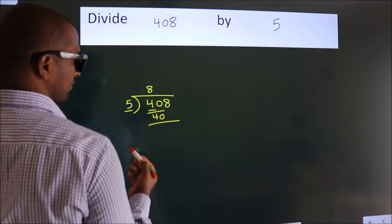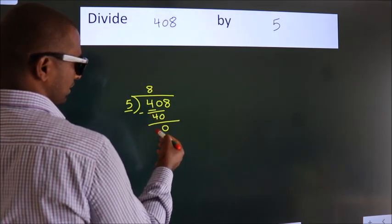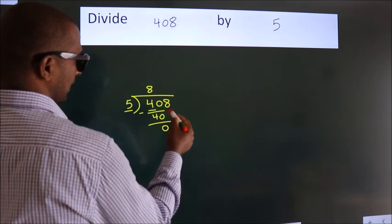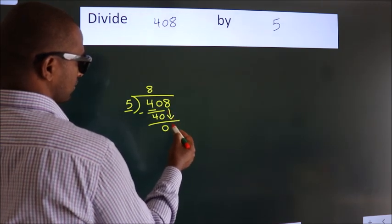Now we should subtract. We get 0. After this, bring down the beside number, so 8 down.